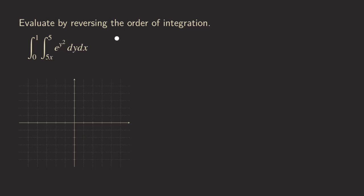Hello everyone, it's Wilson here. Today let's talk about finding this double integral by first reversing the order of integration. The reason we need to reverse the order is because when we first start integrating with respect to y, this function e to the y squared does not have an elementary antiderivative. So we want to try integrating with respect to x first to see if we can get a function that has an elementary antiderivative. There's no guarantee this will always work, but we're going to try it.